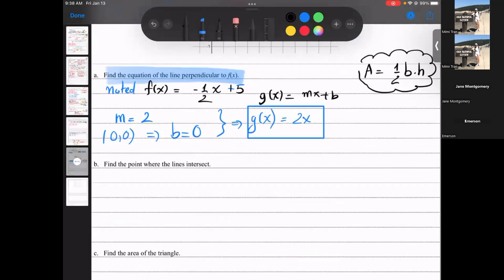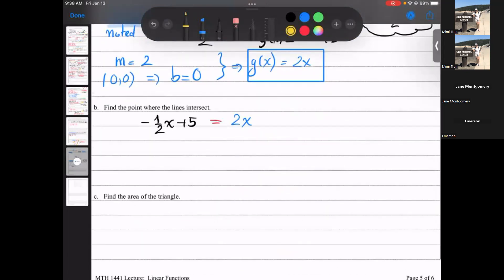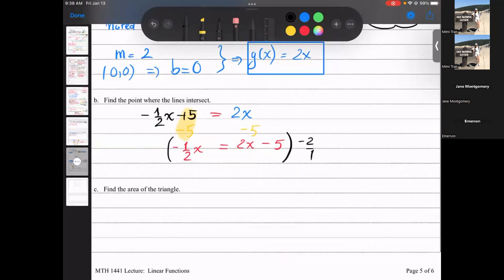So negative one half x plus five, that's the f of x, it gotta be equal to the blue one, which is 2x. And then you solve. Subtract five both sides. I have negative one half x equal 2x minus five. So far, so good. I want to solve for x. So I have to multiply everybody by what? Negative two over one, right? Negative two over one.